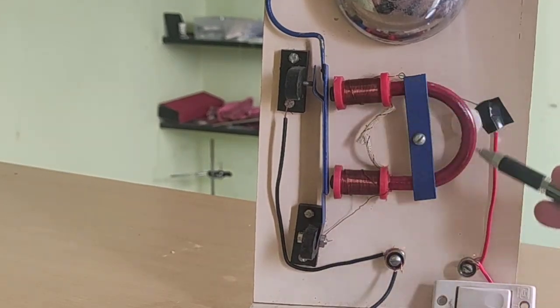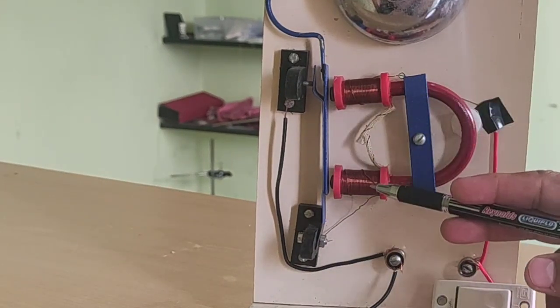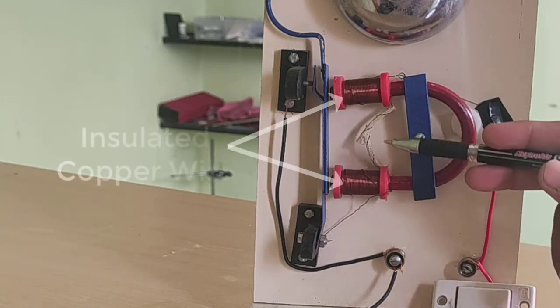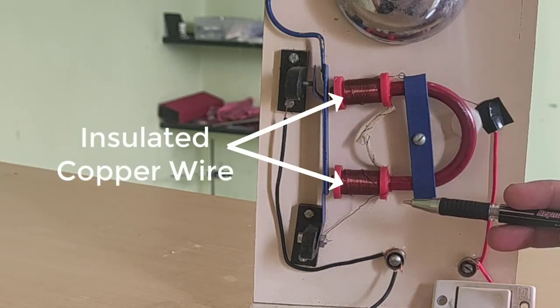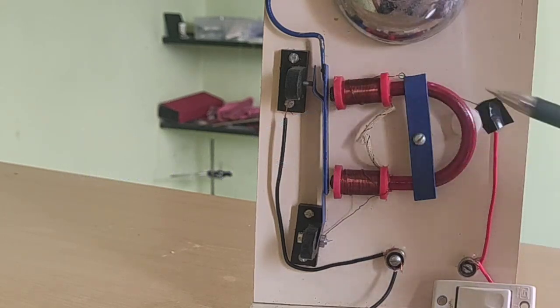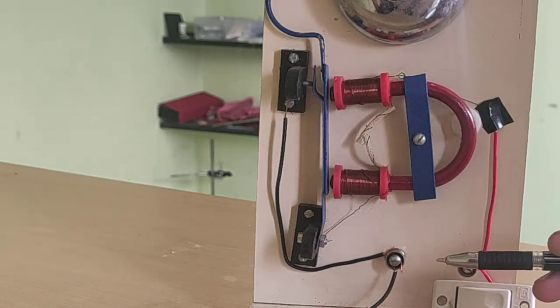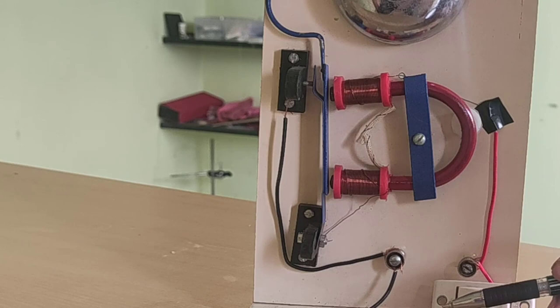In this model we see an iron piece and on both the arms of this iron piece an insulated copper coil is wound. This copper coil acts as an electromagnet in this electric doorbell.